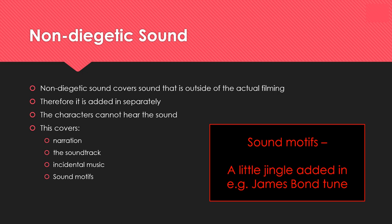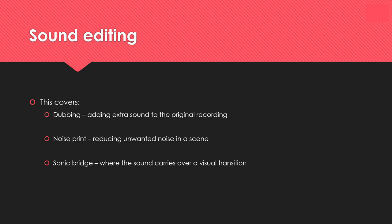You can also have non-diegetic sound, which is sound added in afterwards — added separately, so the characters in the scene can't hear it. This covers things like narration where you do a voice-over, the soundtrack, added music, incidental music, and sound motifs. A sound motif is a little jingle — like a theme tune or music played for one particular purpose. The best example is the James Bond tune that comes up when he's on screen or does something James Bond-esque.